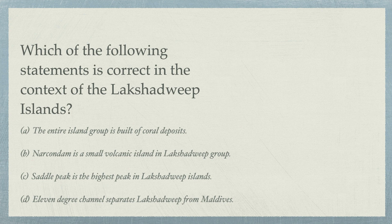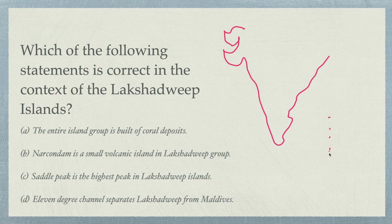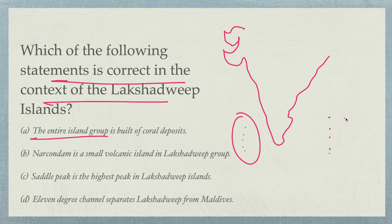Next question: Which of the following statements is correct in the context of the Lakshadweep Islands? Lakshadweep is on the west side of India; Andaman and Nicobar are on the east. The options are: the entire island group is built of coral deposit; Narcondam is a small volcanic island in the Lakshadweep group; Saddle Peak is the highest peak in Lakshadweep; the 11-degree channel separates Lakshadweep from Alder.